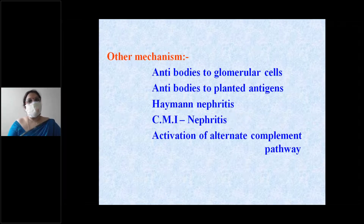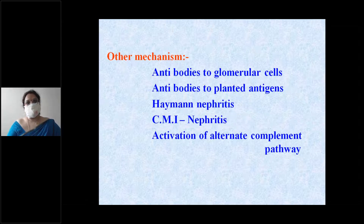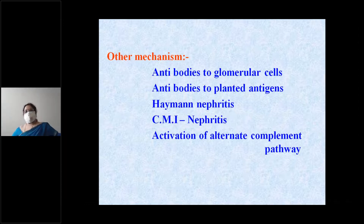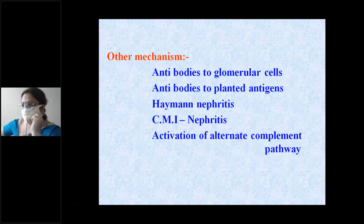Other mechanisms of glomerular injury include antibodies produced against glomerular cells, antibodies to planted antigens, and antibodies against the Heymann antigen — as in Heymann's nephritis and membranous glomerulopathy. Cell-mediated immune mechanisms and the alternative complement pathway can also cause glomerular injury.